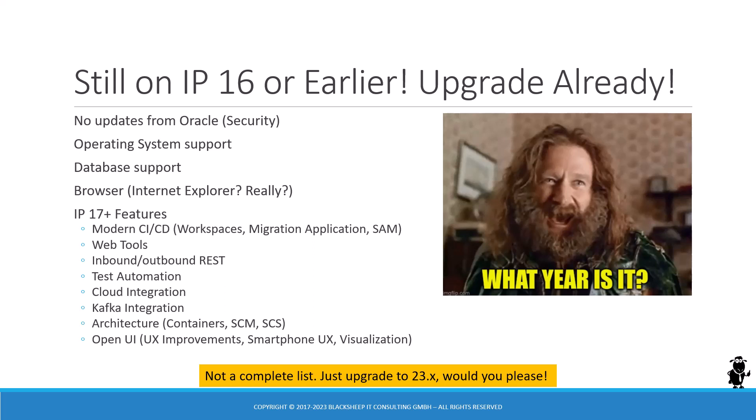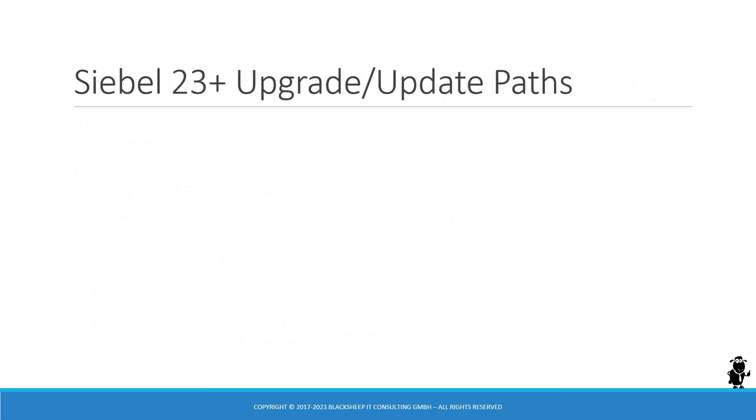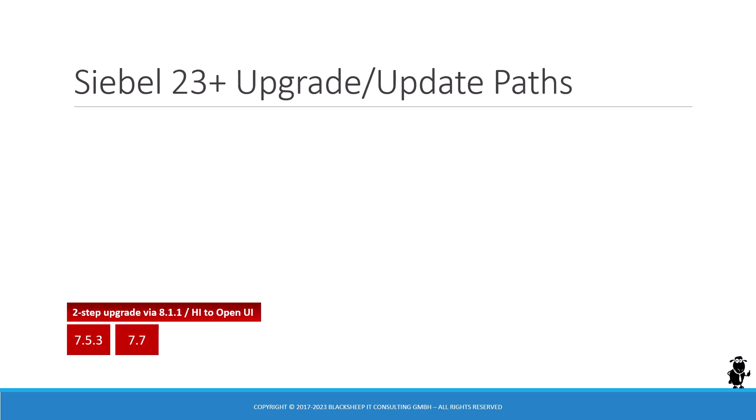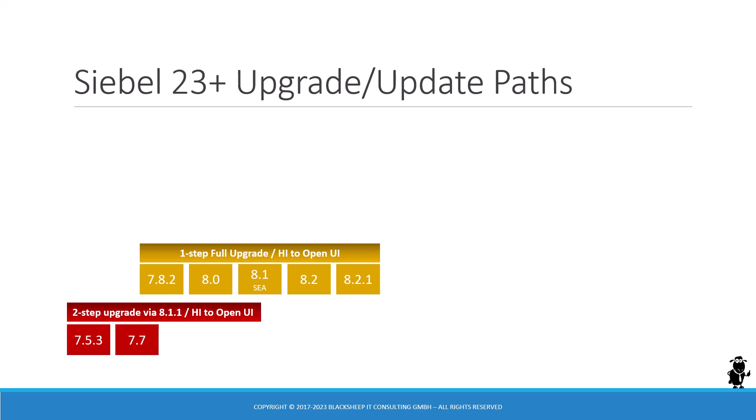If you plan on upgrading, the oldest version officially supported in the database upgrade guide is 7.5.3, which is actually 20 years old — and you can still do an upgrade, albeit as a two-step upgrade. It's documented and you have to migrate high-interactivity to Open UI, so that's really in the red zone with a lot of work. It gets easier the higher your version is — less friction. If you're on 7.8 through 8.2, those are non-Open UI releases which still require you to migrate high-interactivity to Open UI.